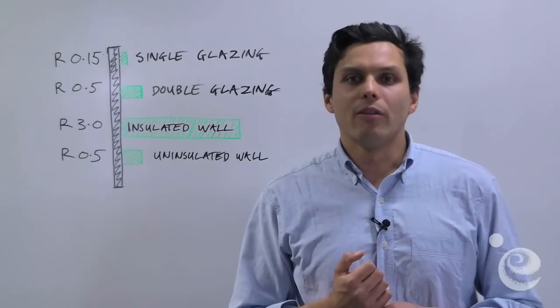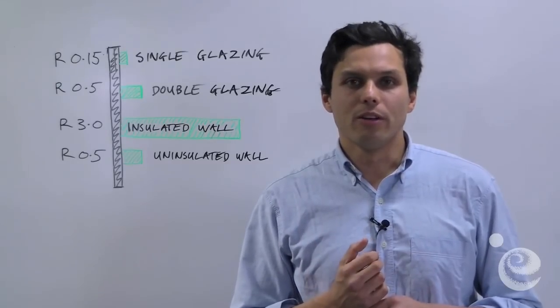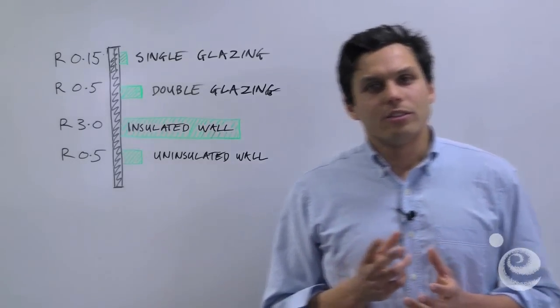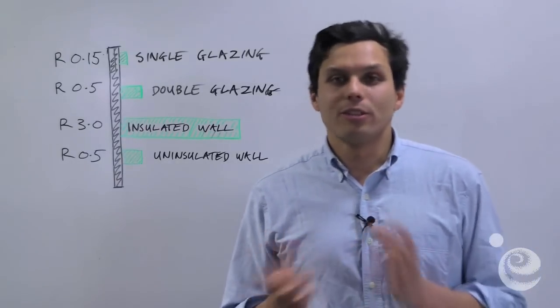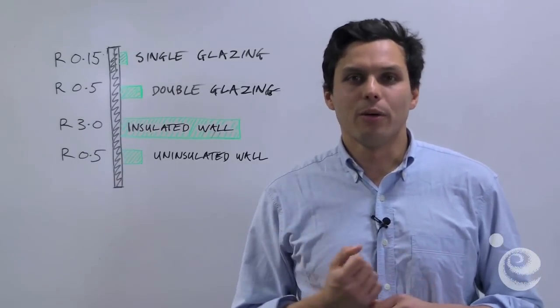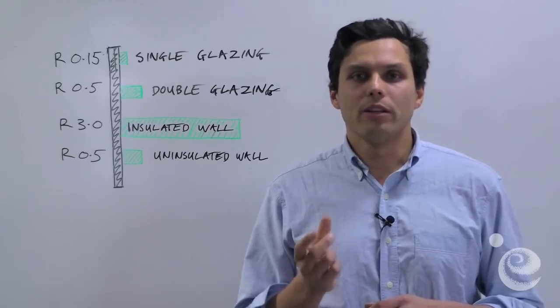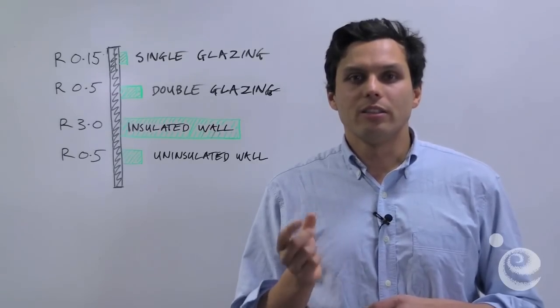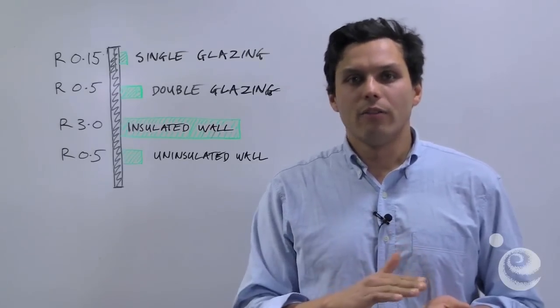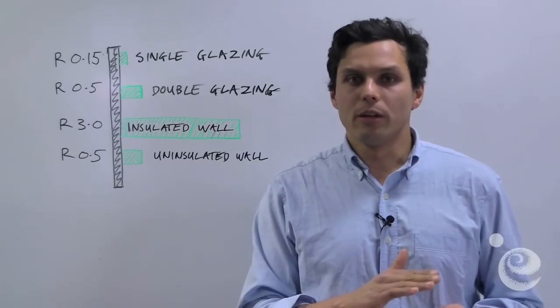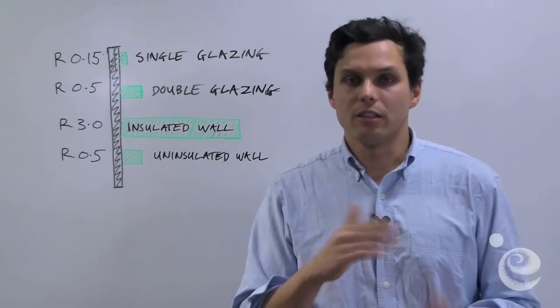The second concept is about R values. R values is a technical concept and some people get put off by it, but it's actually quite easy. R values simply refers to the ability for a material to insulate. A low R value means the material can't insulate very well at all. A high R value means it can insulate much better.